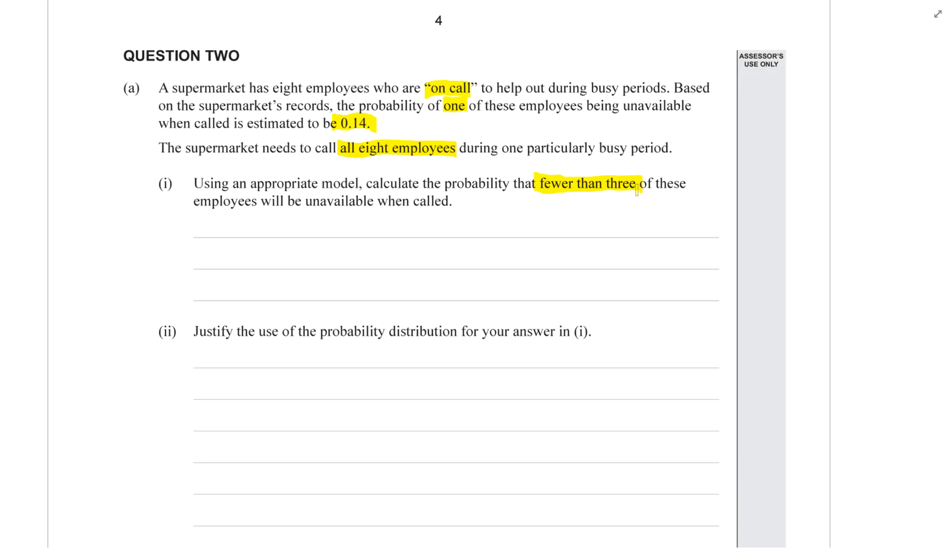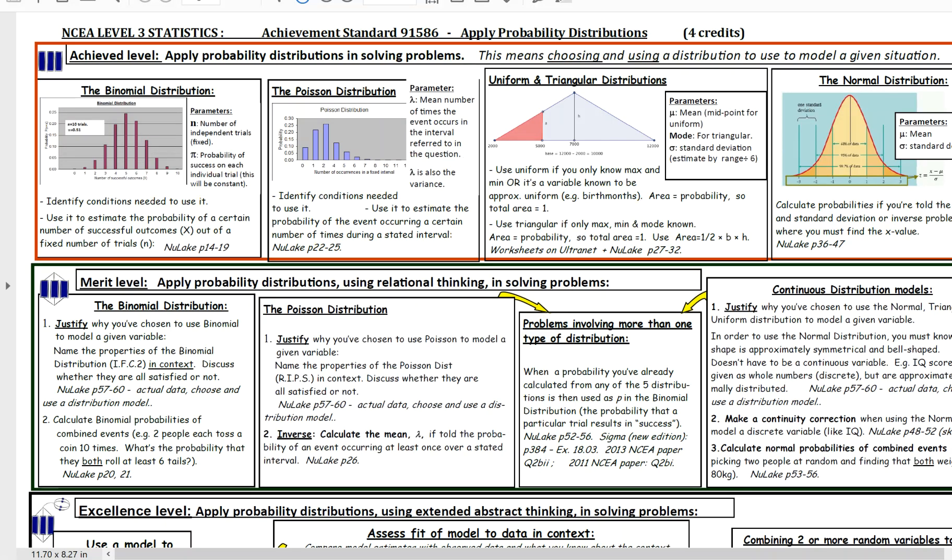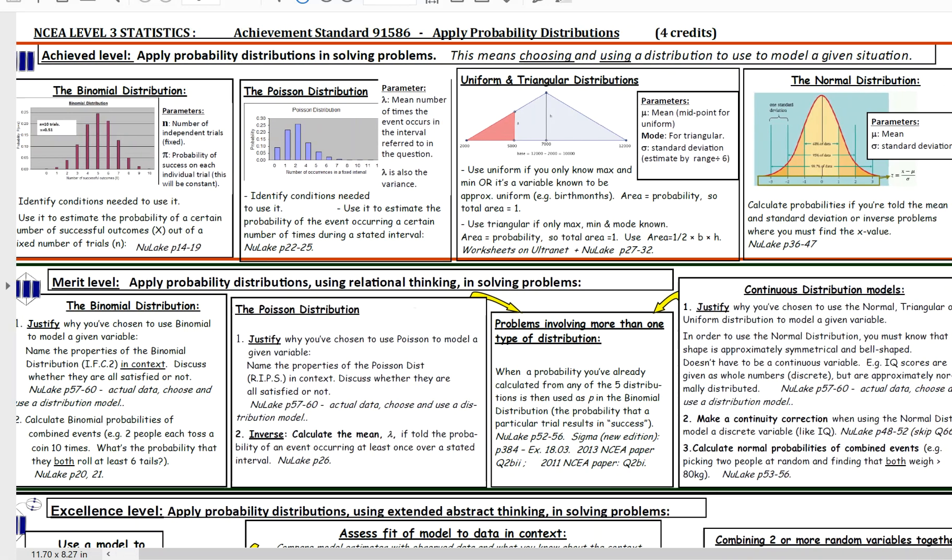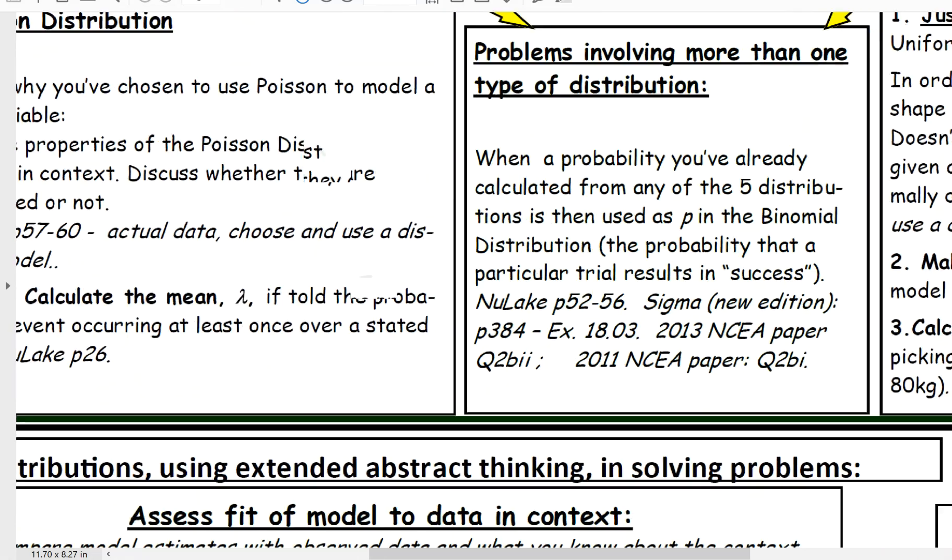It's the number of employees that will be unavailable. So that's counting, so that's discrete. If we go to our map of the distributions, we know that we're not dealing with normal, uniform, or triangular. We're either dealing with binomial or Poisson, the ones with the bar graphs in them.